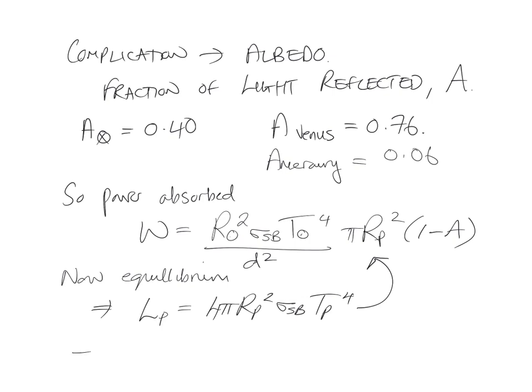Which means that we have this equation: radius squared of the sun, σ Stefan-Boltzmann, temperature of the sun to the fourth power, divided by d², π times the radius of the planet squared, times 1 minus the albedo, equals 4πrₚ², σ Stefan-Boltzmann, temperature of the planet to the fourth power.